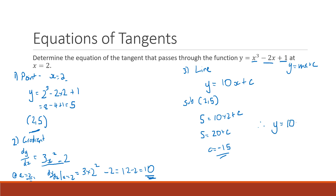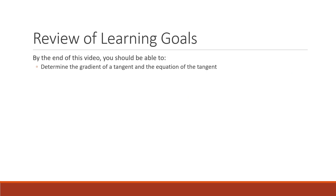So 5 = 10(2) + c, meaning 5 = 20 + c, so c = −15. Therefore the equation of our tangent is y = 10x − 15. That's the equation of the tangent that passes through our cubic at the point x = 2. After watching this video you should be able to determine the gradient and equation of a tangent using differentiation.